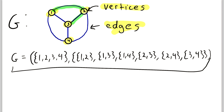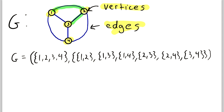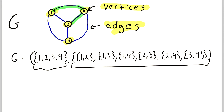This is the graph G written out explicitly as an ordered pair with this vertex set and this edge set. We can see all the edges in the set: one-two, two-three, one-three, two-four, three-four, and one-four. I wrote all of these with the lower numbered vertex first and the higher numbered vertex second, but I want to make clear that is not important — you could write all of these edge sets in reverse order. All that matters is that the vertices listed in these subsets are joined by an edge.